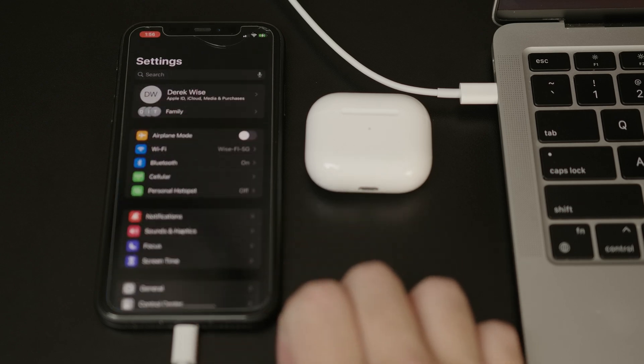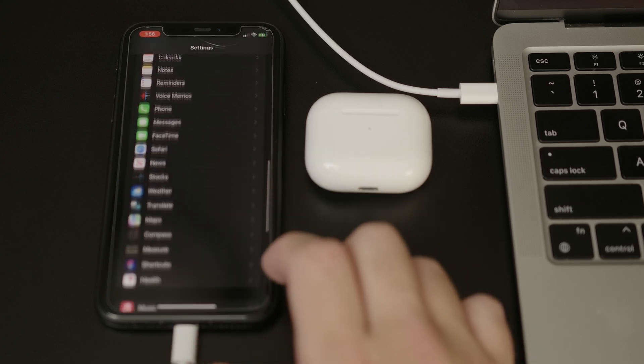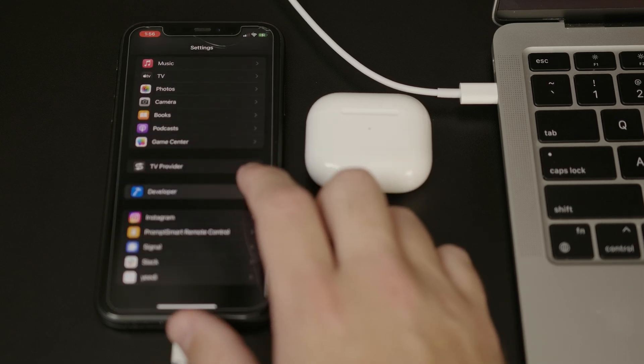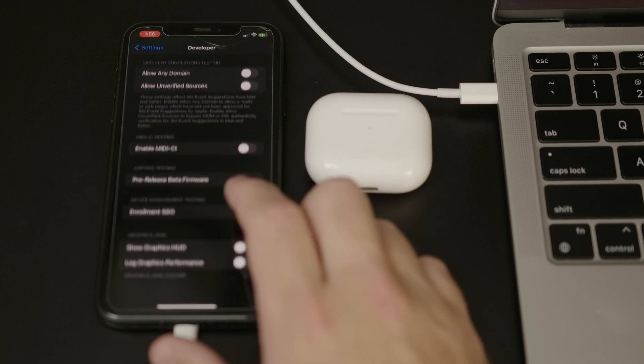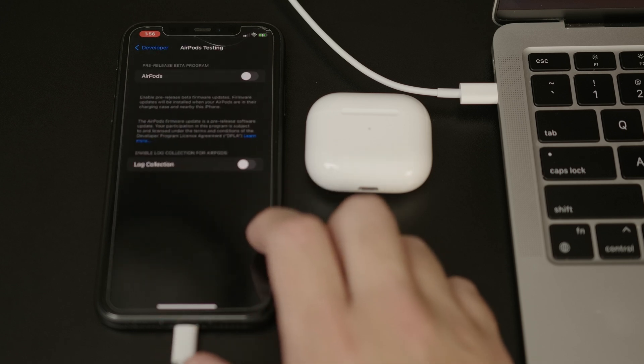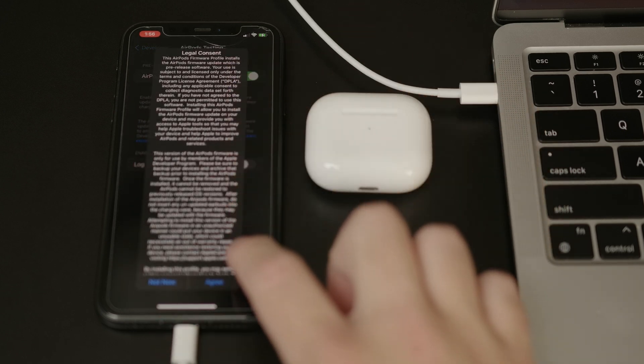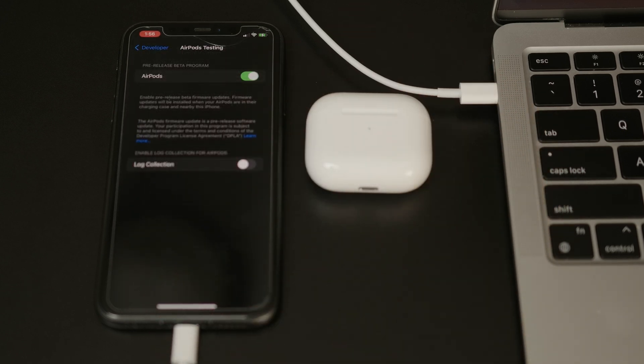Then, within your iPhone's settings, go to the Developer section. At the bottom of the Developer section, under AirPods Testing, click on Pre-Release Beta Firmware. Within there, you can enable it for the specific AirPods you want to receive the beta firmware after you agree to the terms.